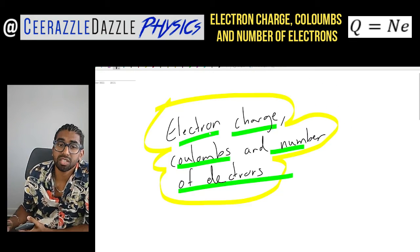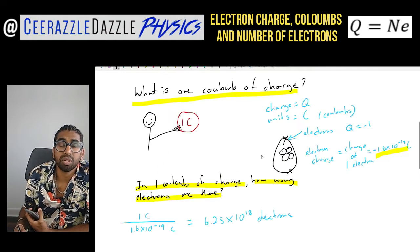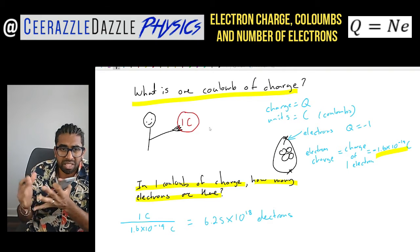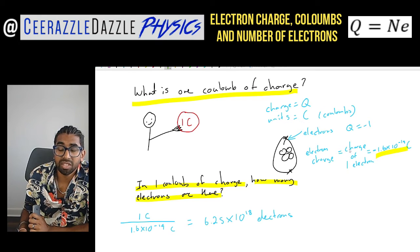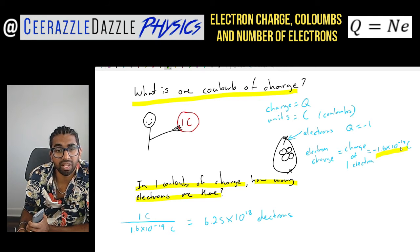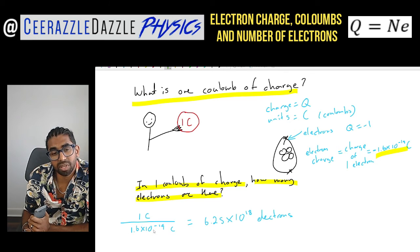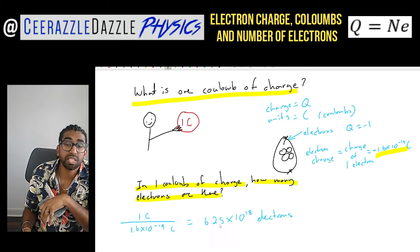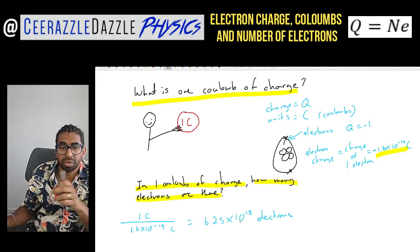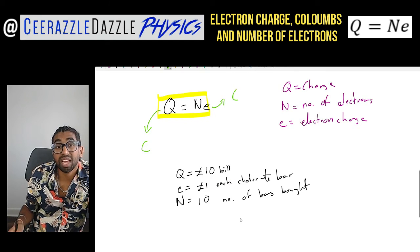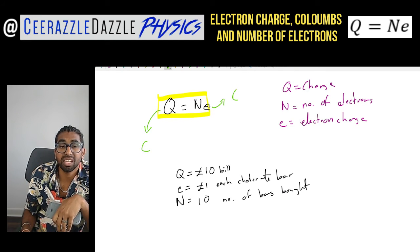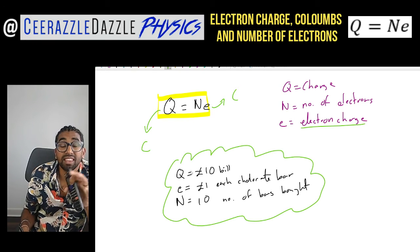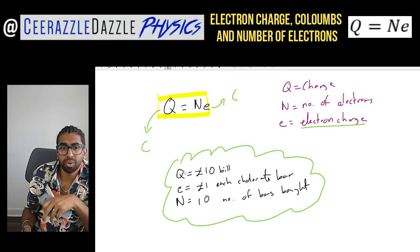Let's have a quick recap. Today's title is electron charge, coulombs and number of electrons. We talked about what one coulomb of charge is — what's actually inside it. Every single electron has a charge of 1.6×10⁻¹⁹ coulombs, which is the electron charge. Inside one coulomb you've got 6.25×10¹⁸ electrons — a very large number. We put that into the formula Q equals N times E, where Q is the charge, N is the number of electrons, and E is the charge of one electron, also known as the electron charge. And we related it to the chocolate bar analogy.